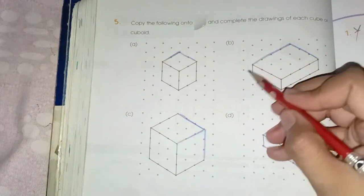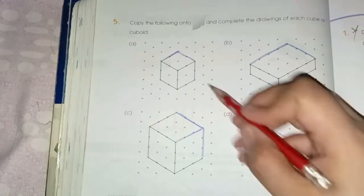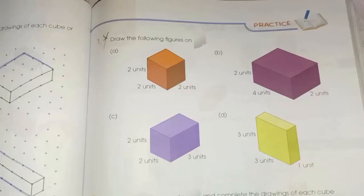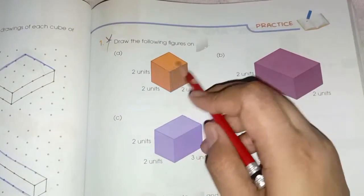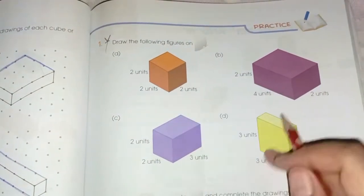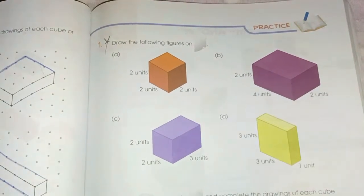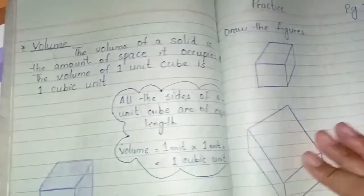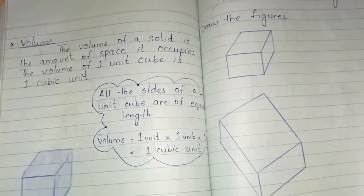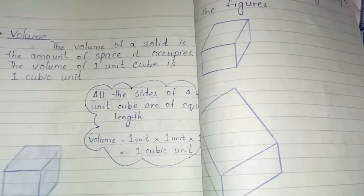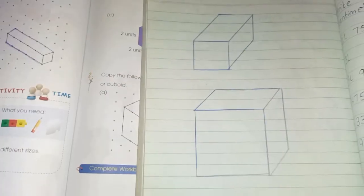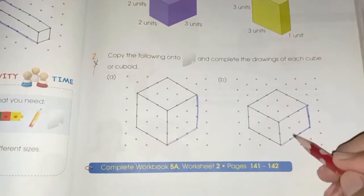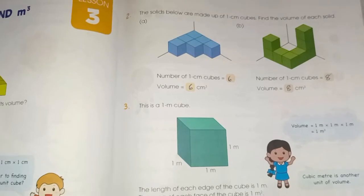Here we just have to complete the shape by drawing the missing lines. Page number 152, practice. Here we have to draw these shapes in the copy and complete the pattern.